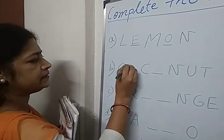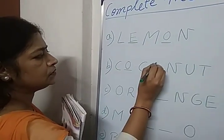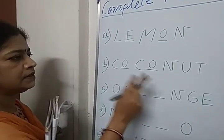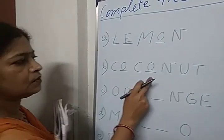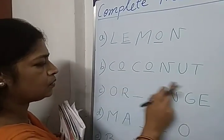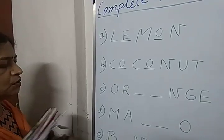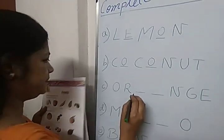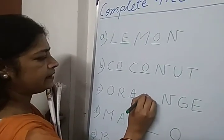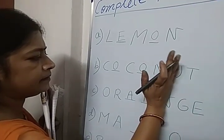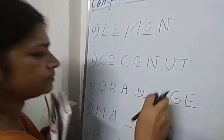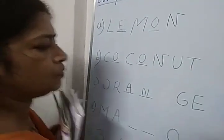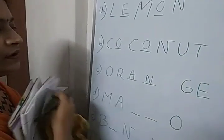Next is coconut. C-O-C-O-N-U-T. C-O-C-O-N-U-T. Coconut. Orange. O-R-A-N-G-E. Orange.